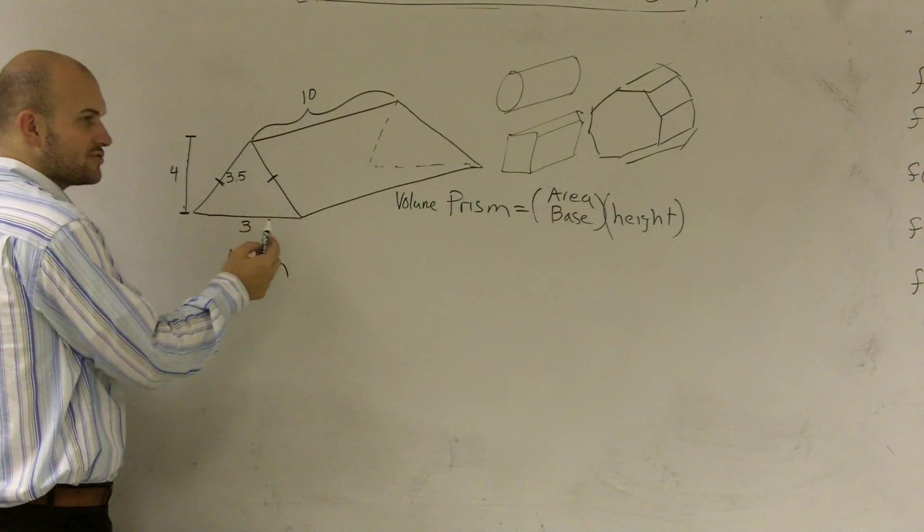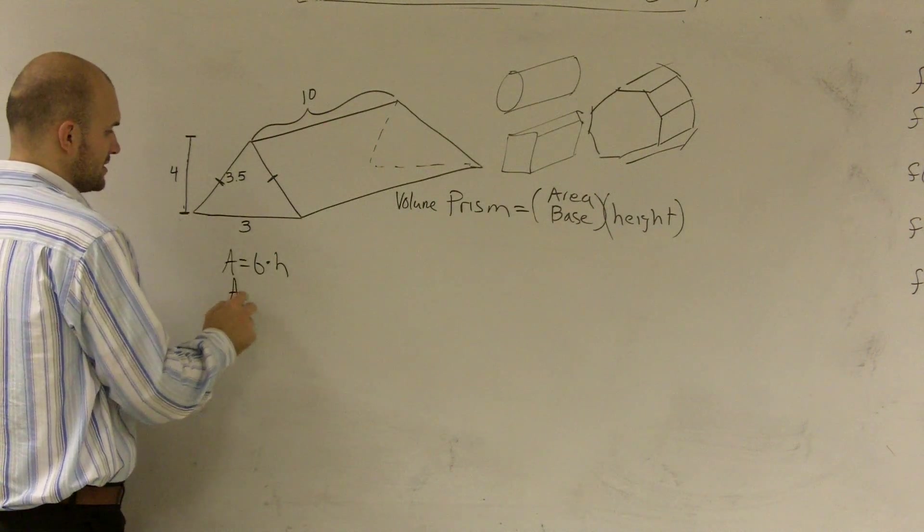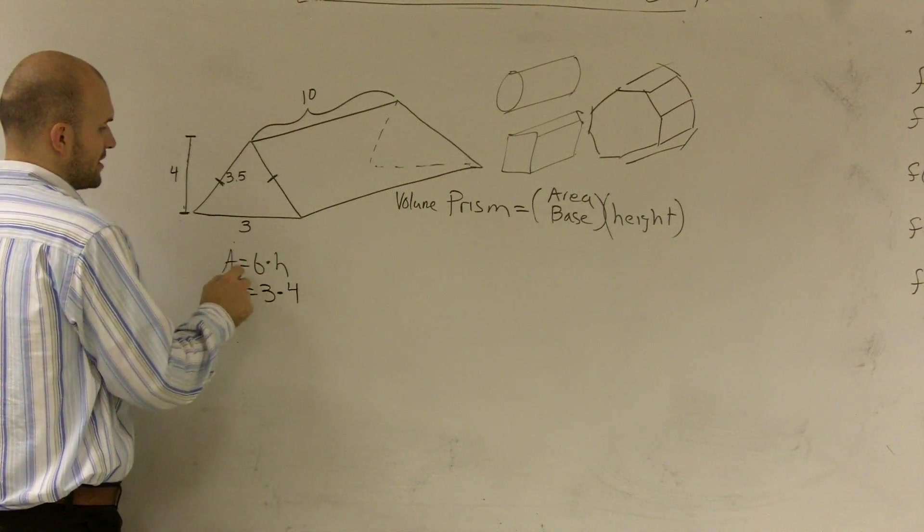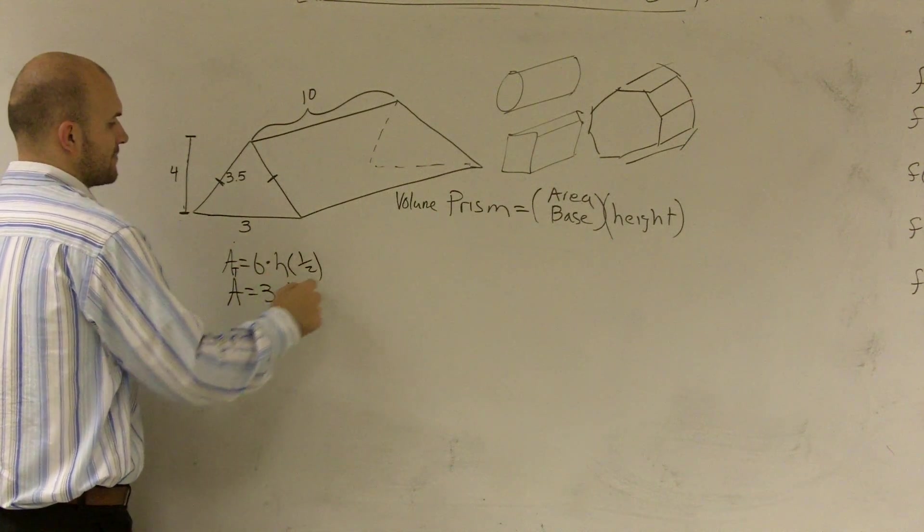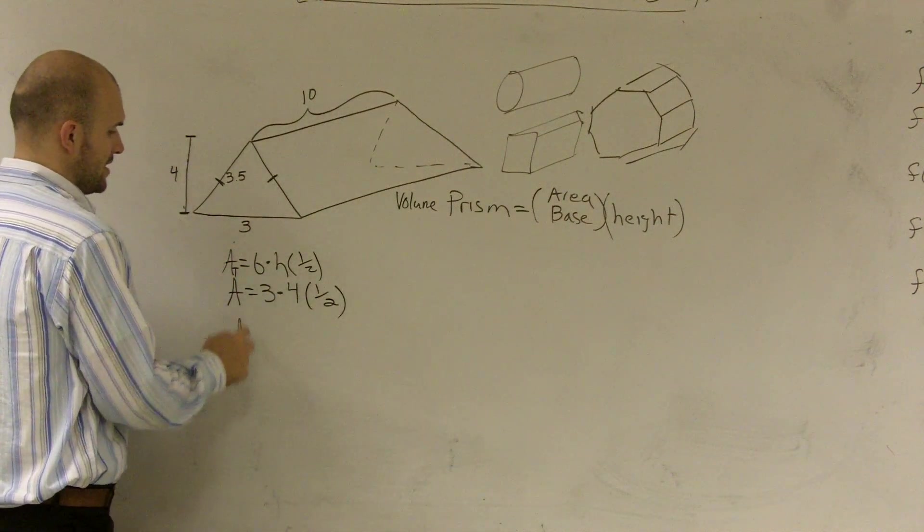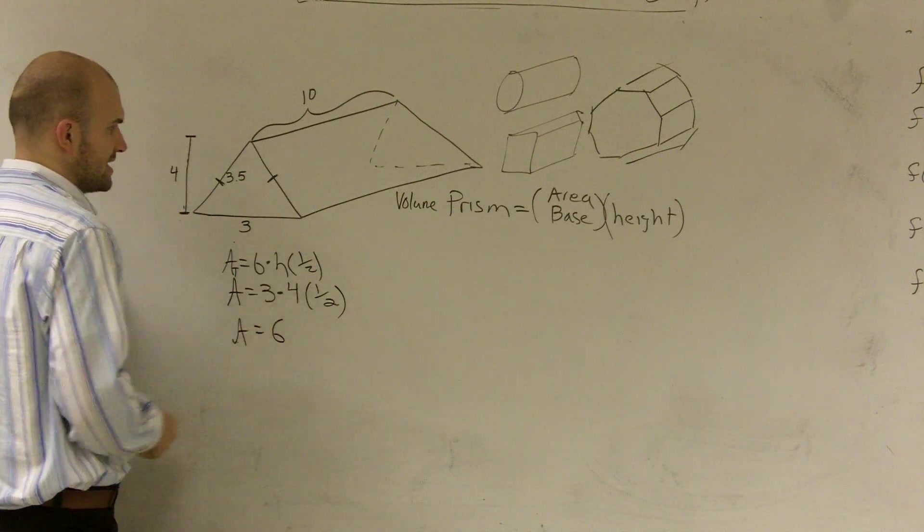Because I don't have a right angle, I'm going to have to use area equals base times height. So my area is going to equal 3 times 4—I'm sorry, this is the area of a triangle, so it's multiplied by one half. One half base times height. So area equals 3 times 4, which is 12, times one half, which equals 6.